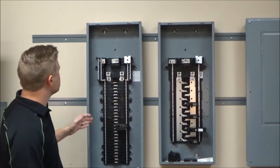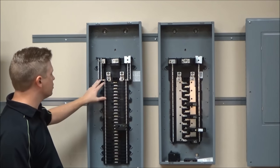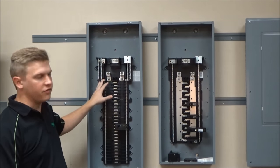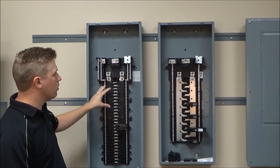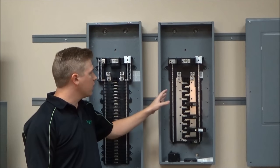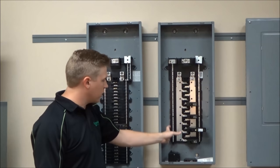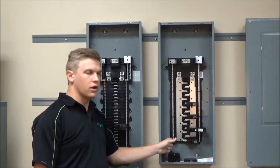Another difference is the neutrals. The branch neutrals are all located near the top of the load center on a QO, whereas on the Home Line they have the branch neutrals located all the way down the interior of the load center.